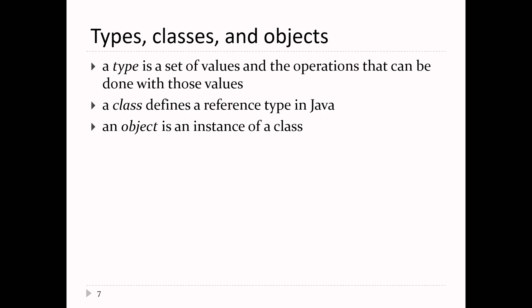Now let's talk about strings — and first, types, classes, and objects. A type is a set of values and the operations that can be done with those values. For int, the values range from the smallest to the largest representable integer, and the operations include arithmetic, comparisons, and a few others. A class is simply a reference type in Java. int, double, and boolean are all primitive types; classes are reference types, and in particular they are user-defined reference types.